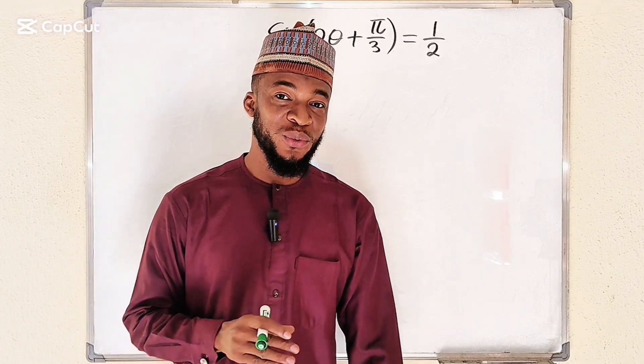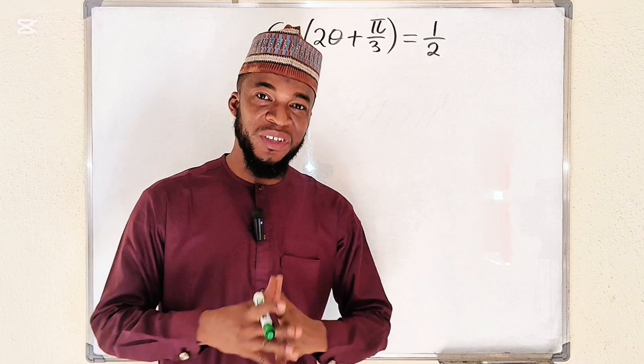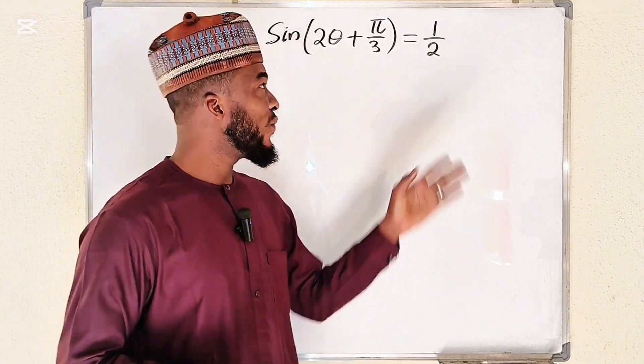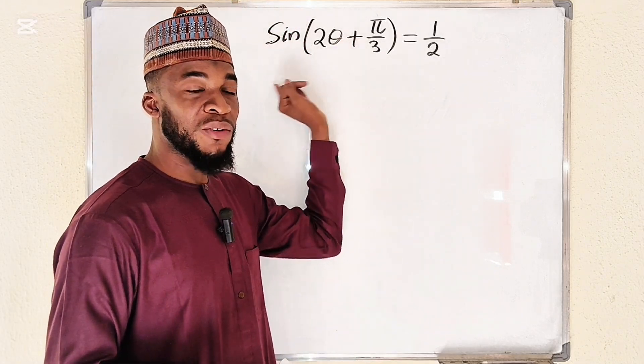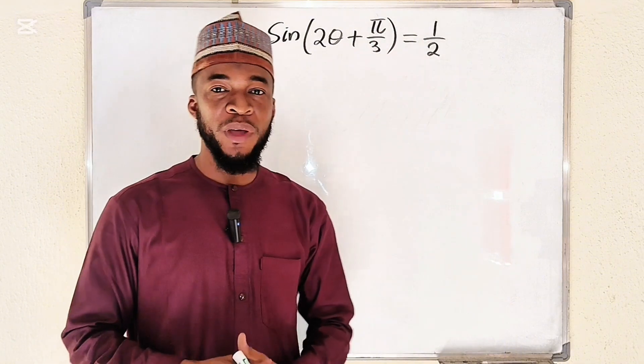Hello everyone, in this tutorial we are going to provide a solution to this interesting trigonometric equation. We would like to find the value of this angle theta given that sine of 2 theta plus pi divided by 3 is equal to 1 over 2.